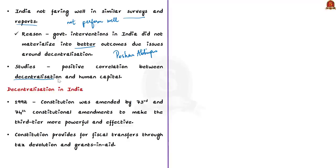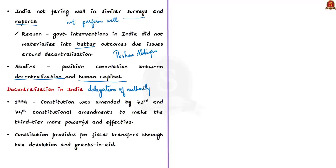Studies suggest a positive correlation between decentralization and human capital — the better the decentralization, the better will be the human capital. Decentralization is the delegation of authority throughout the organization. In polity, a government is said to be decentralized when power is taken away from the central and state governments and given to the third tier of government — local government, which is set up at the village and district level.